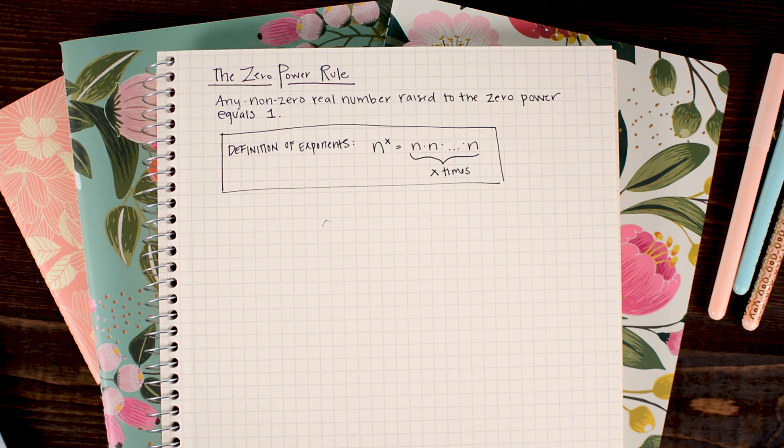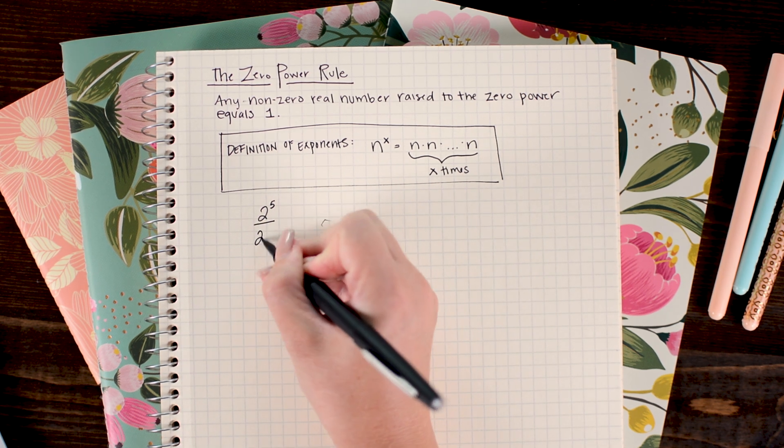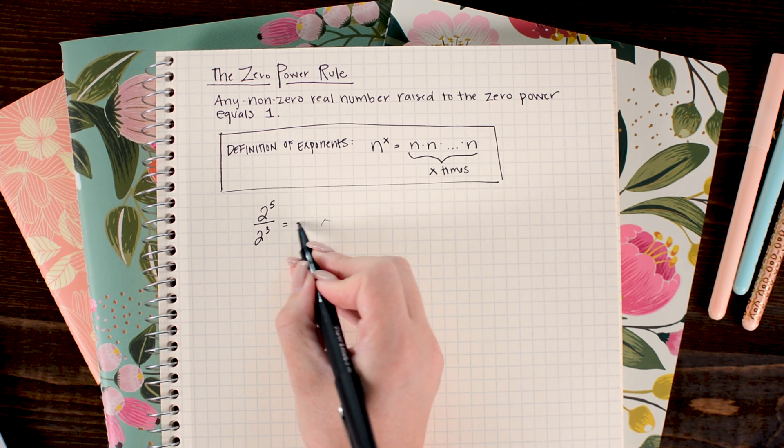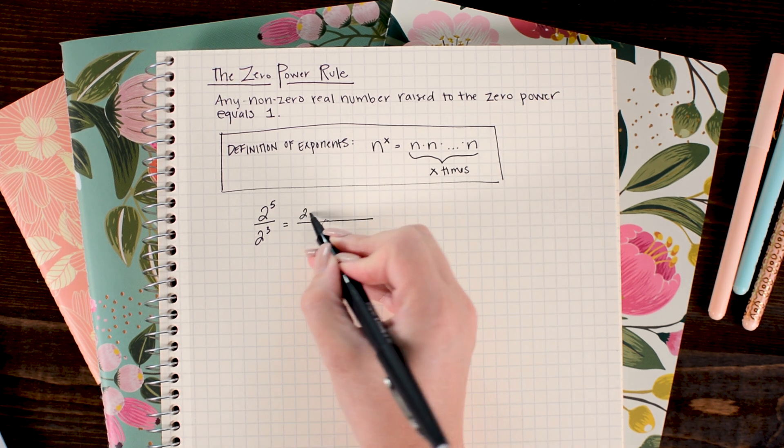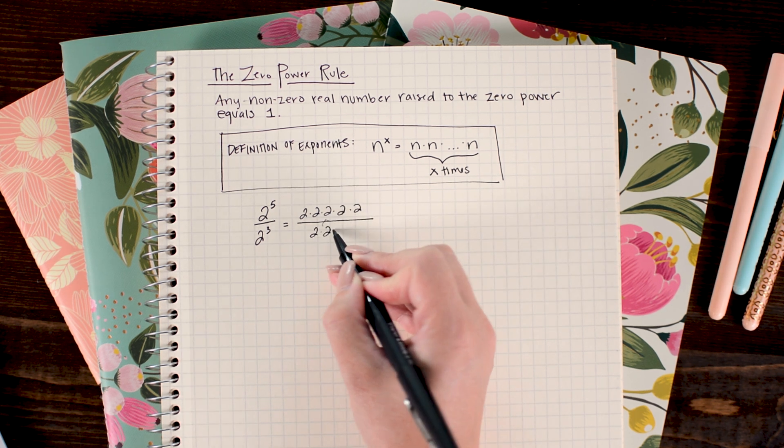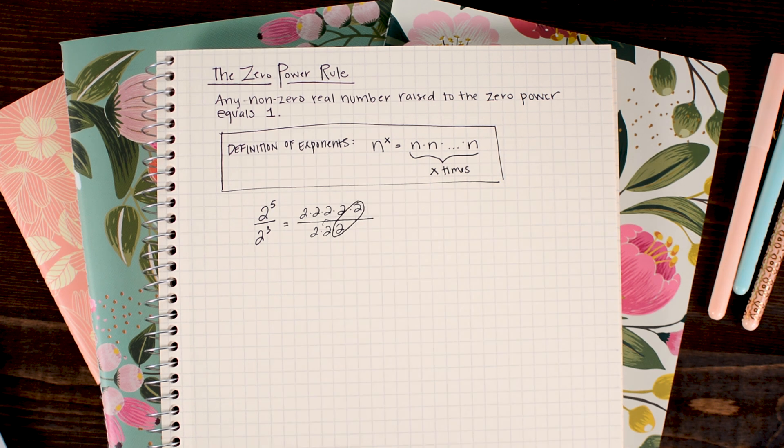Before we jump in to showing why this is true, we want to review a couple basic things regarding exponents. So I'm going to do a little warm-up example for you. Recall that 2 to the fifth power over 2 cubed can be thought of as 5 twos multiplied together in the numerator and 3 twos multiplied together in the denominator.